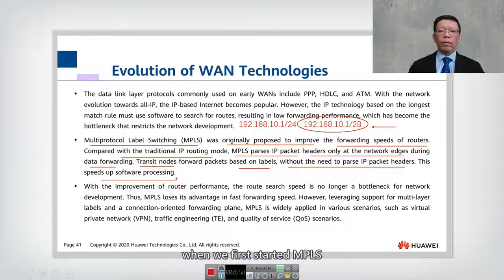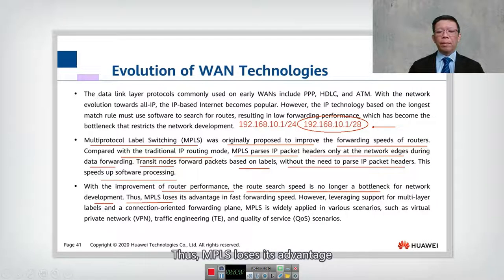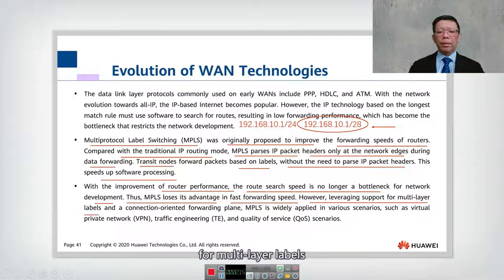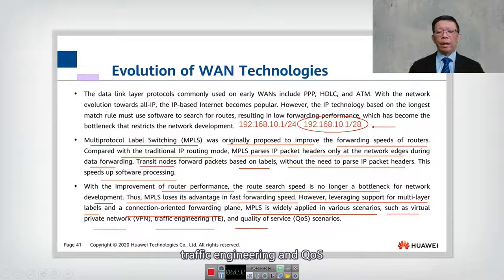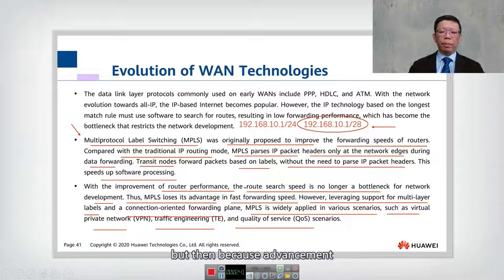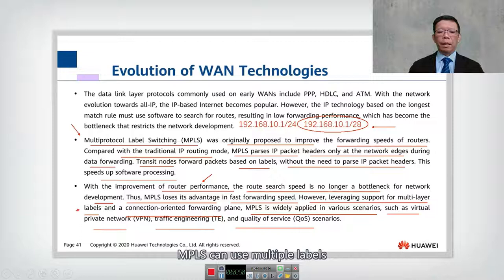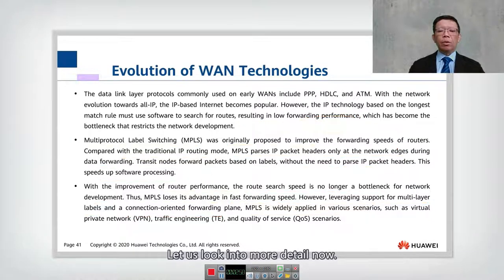That was the motivation when MPLS was first introduced. With the improvement of router performance, route search speed is no longer a bottleneck for network development, so MPLS lost its advantage in fast forwarding speed. However, leveraging support for multi-layer labels — in MPLS we can use multiple stacks of labels — and connection-oriented forwarding plane, MPLS is widely applied in scenarios such as virtual private networks, traffic engineering, and QoS. So while the original motivation was slow IP routing speed, router performance advancements diminished that advantage, but MPLS remains very attractive in the service provider space.